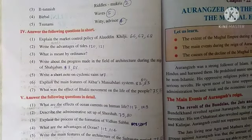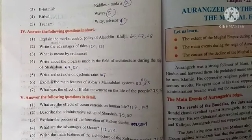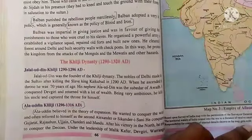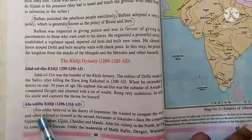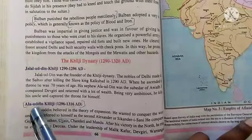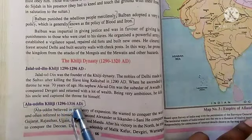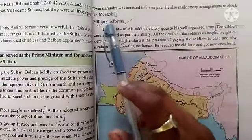Now answer the following question in short. Explain the market control policy of Alauddin Khilji. This answer is in page number 66, 67, and 68. Alauddin believed in the theory of expansion. Alauddin Khilji's time is 1296–1316 AD.